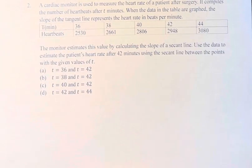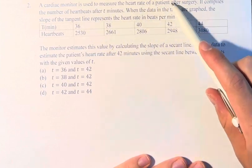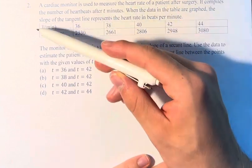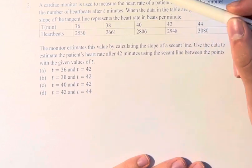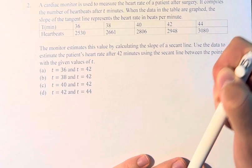Hello, and welcome back to another video. In this problem, we're told that a cardiac monitor is used to measure the heart rate of a patient after surgery. It compiles the number of heartbeats after t minutes. When the data in the table are graphed, the slope of the tangent line represents the heart rate in beats per minute.